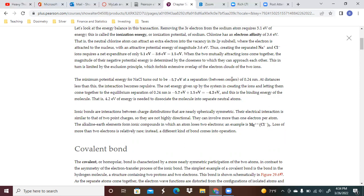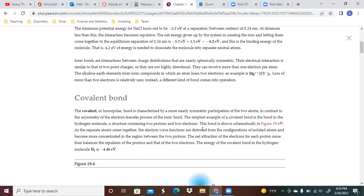Ionic bonds are interactions between charge distributions that are nearly symmetric. Their electrical interaction is similar to that of two point charges, so they're not highly directional. They can involve more than one electron per atom. The alkaline earth metals form ionic compounds in which an atom loses two electrons, such as magnesium and chlorine.